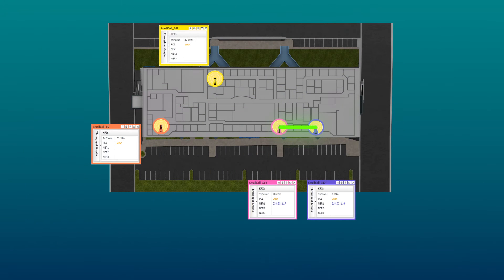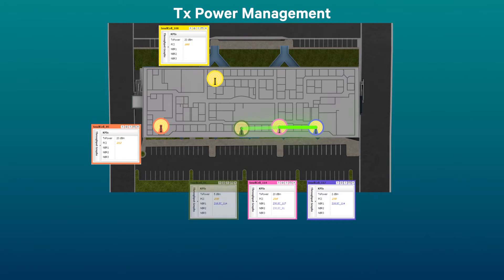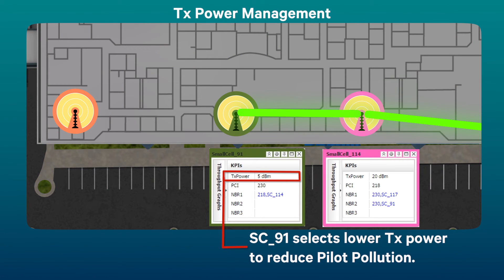As small cell density increases, the transmit power management feature sets the small cell transmit power to reduce pilot pollution. Small cell 91, which is deployed next to 114, transmits at a much lower power of 5 dBm to reduce pilot pollution.